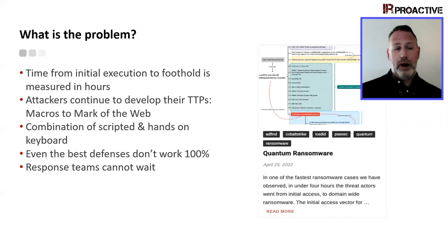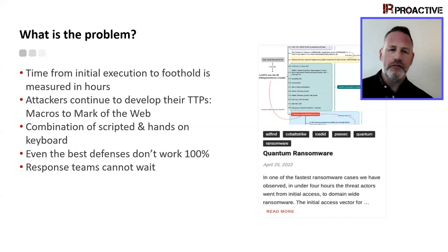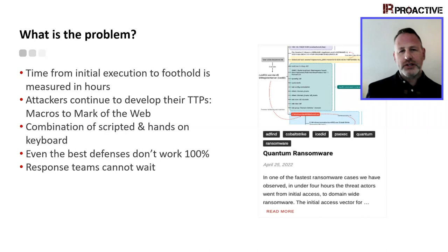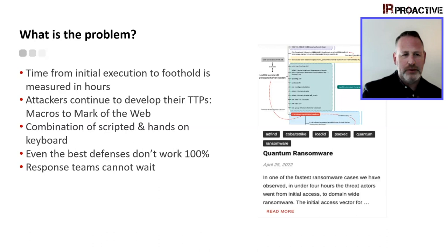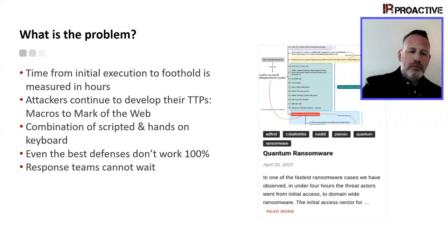The problem is the speed with which threat actors are moving. Looking at what's happening right now, we see threat actors dropping a malicious OneNote file as their initial foothold, and then we're seeing full execution measured in hours. We also have a continual redevelopment of TTPs — from macros to Mark-of-the-Web attacks where we're mounting an ISO and executing right from there.